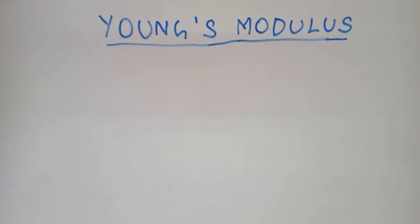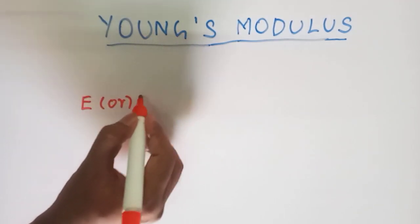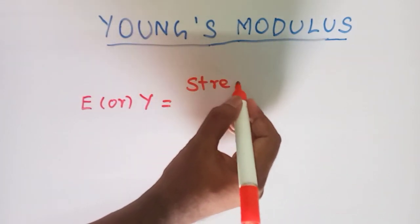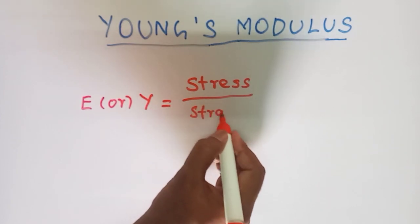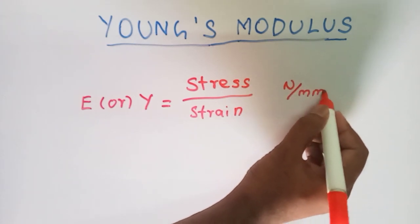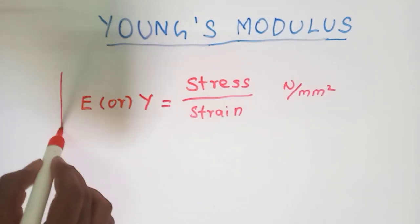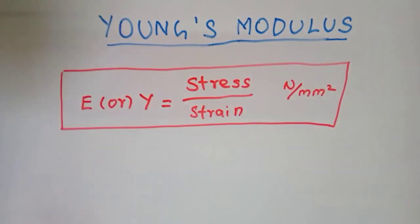Young's modulus, another name modulus of elasticity, the symbol is E. E is equal to stress divided by strain within the elastic limit. Stress unit is newton per millimeter square, strain has no unit, so Young's modulus is expressed in newton per millimeter square.